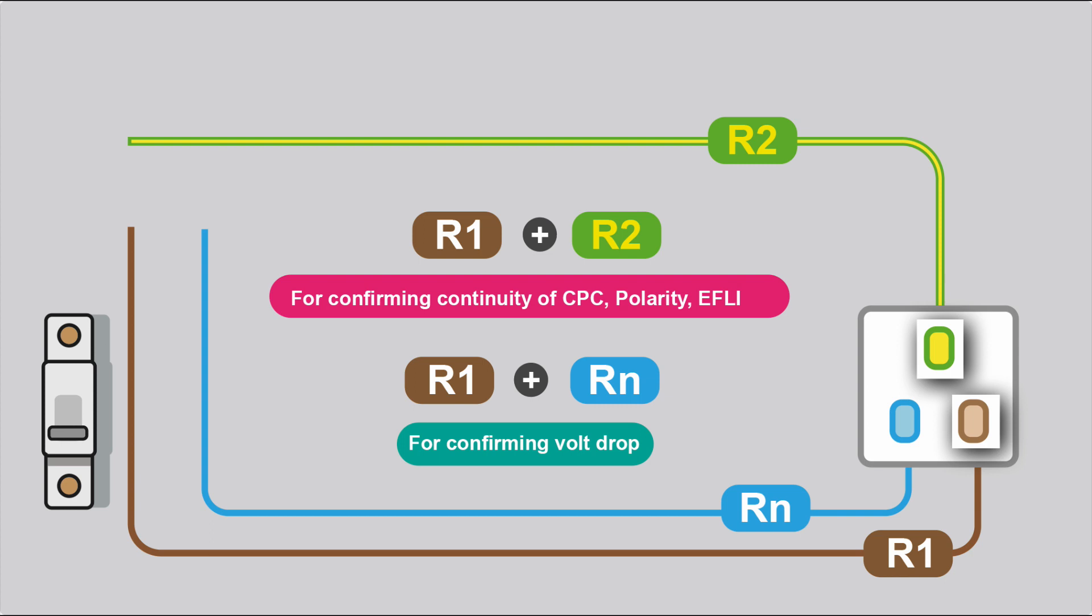So the R1 plus R2 test will be between line and CPC, so it's used for confirming continuity of the CPC, in polarity tests, your earth fault loop impedance. And when you're confirming volt drop, you would test between R1 and Rn, that is between your line and your neutral conductors.